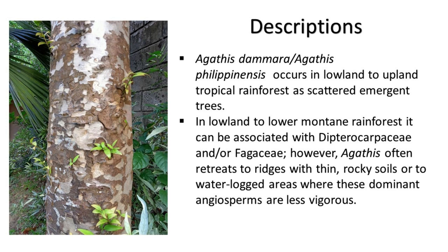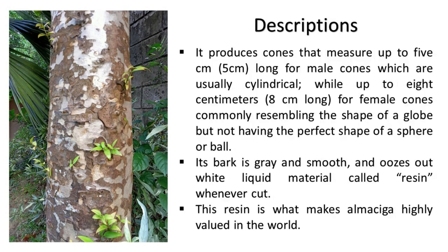Agathis dammara / Agathis philippinensis occurs in lowland to upland tropical rainforest as scattered emergent trees in lowland to lower montane rainforest. It can be associated with Dipterocarpaceae and Orphagaceae; however, Agathis often retreats to ridges with thin rocky soils or waterlogged areas where dominant angiosperms are less vigorous. It produces male cones up to 5 cm long, usually cylindrical, and female cones up to 8 cm long, commonly globe-shaped but not perfectly spherical.